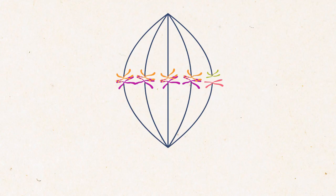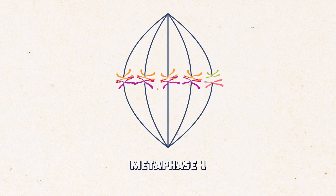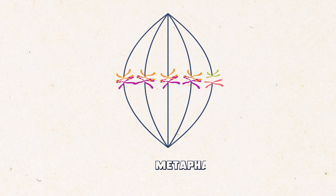All the chromosomes with their chiasma align on the equatorial plane and the spindle fibers start to pick up chromosomal centromeres. After the alignment is complete, the metaphase 1 ends.